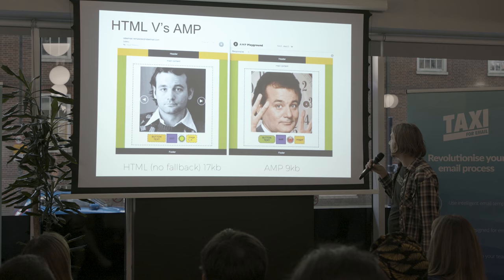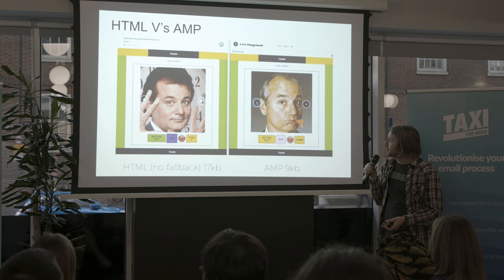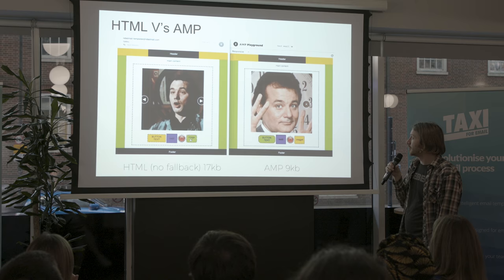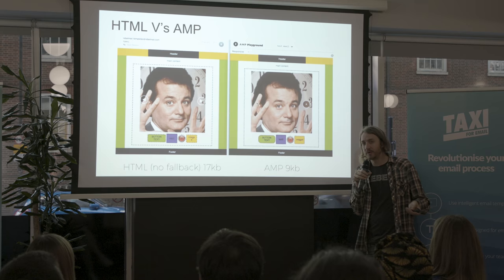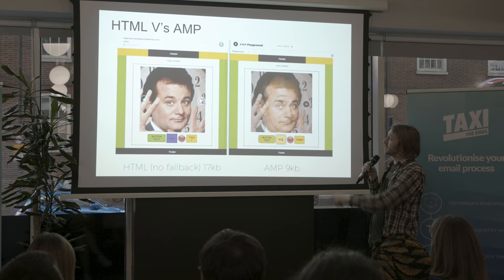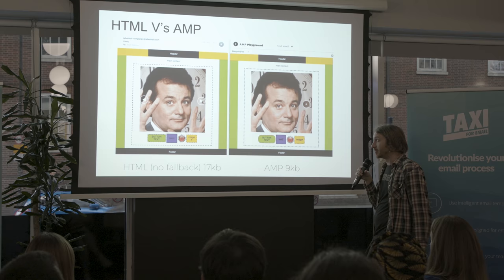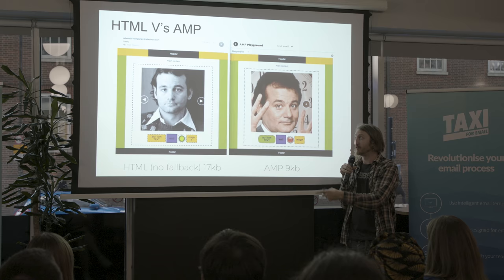I built a couple of little examples. On the left is an HTML image gallery and on the right is an AMP one — they function and look pretty similar. On the left that's in Apple Mail, and on the right is in the AMP Playground. If you go online, there's an AMP for email Playground where you can write up your AMP code, put it in there, and it'll render — that's where most of my testing for this talk has been done. The file size is quite interesting: the HTML version is 17 kilobytes, the AMP version is 9 kilobytes — almost half the size. But that HTML is without a fallback for the gallery, so if you put a fallback in that'll take it over 18, and then it'll be half the size.